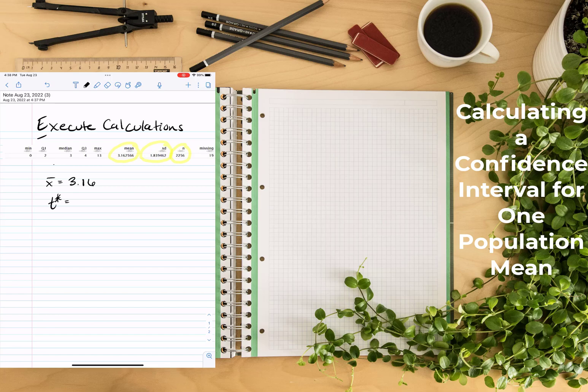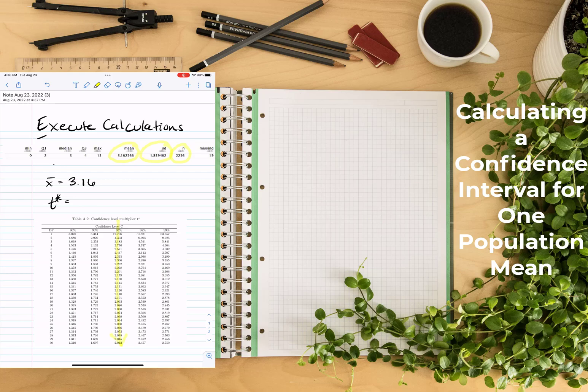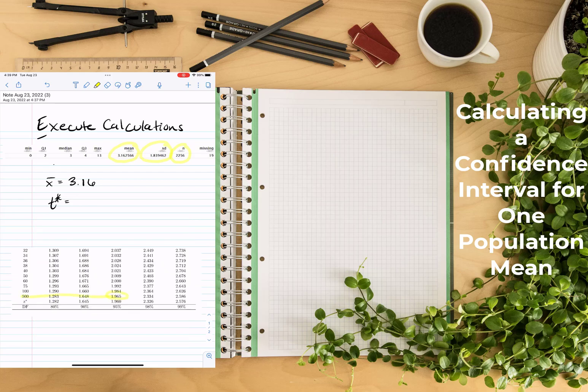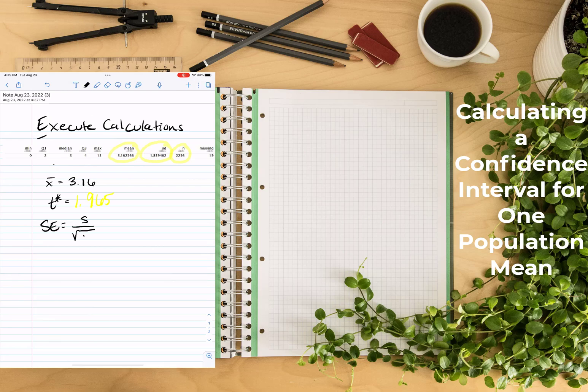Then we find our t-star multiplier. So remember we wanted to be 95% confident. So looking at that t-star multiplier table, I would go 95 and then the closest one is 500. So I have a multiplier of 1.965.